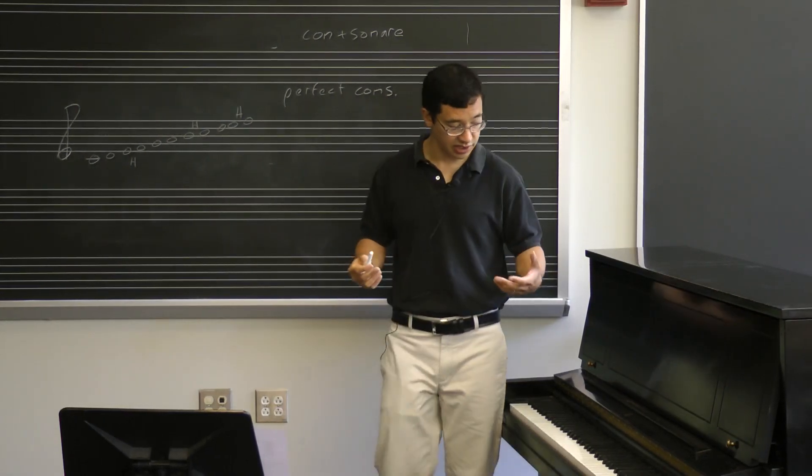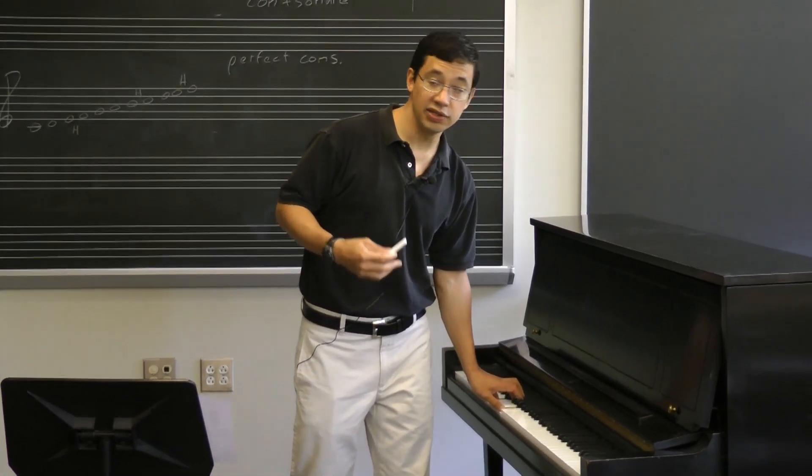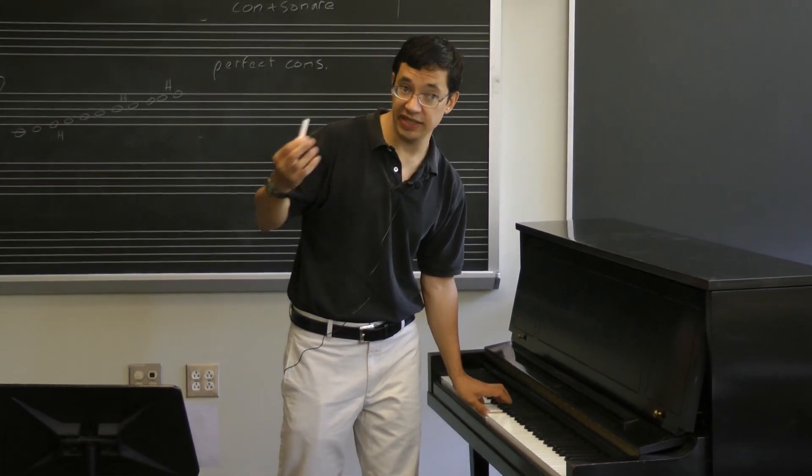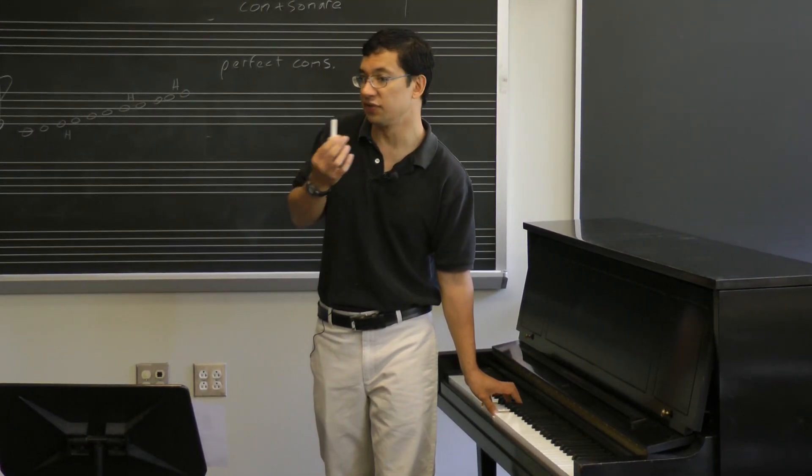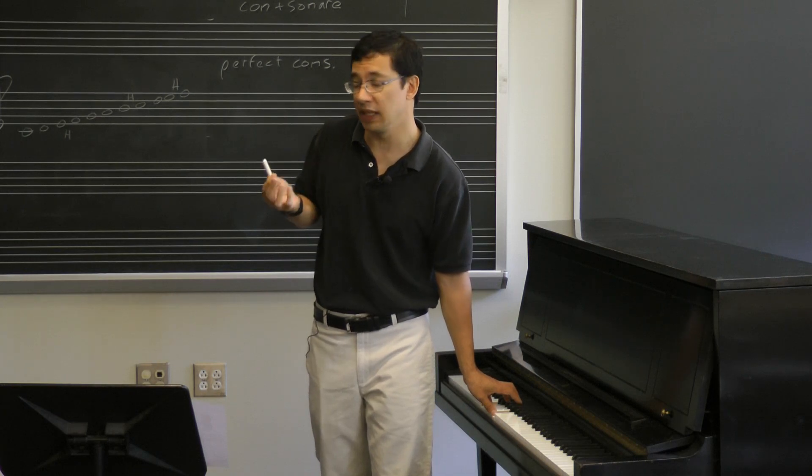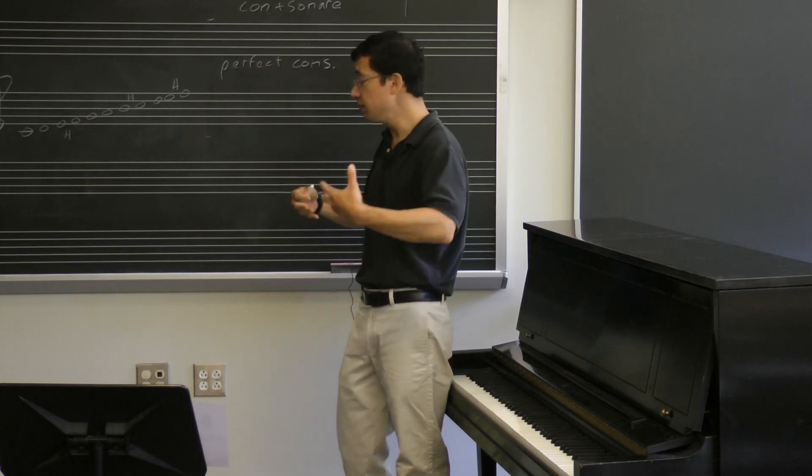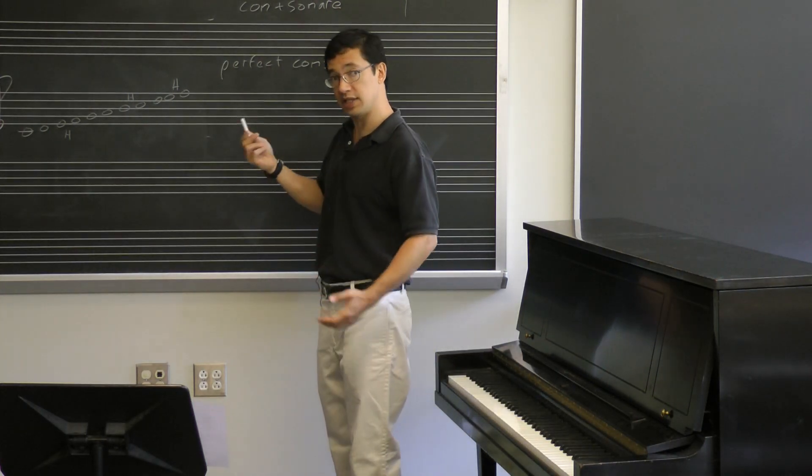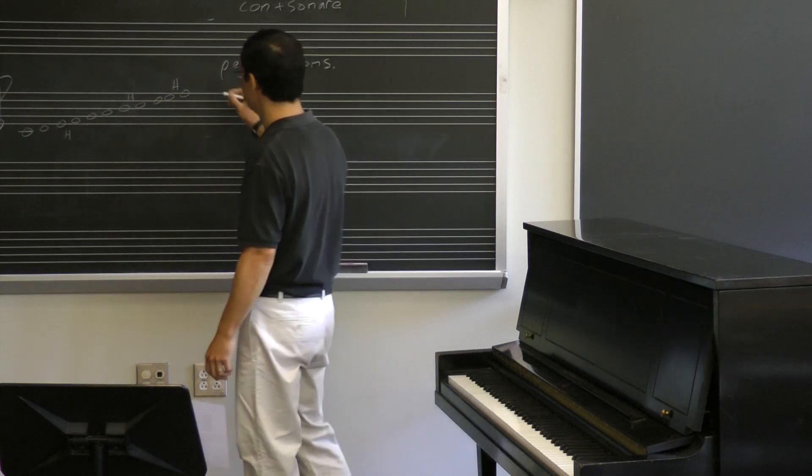Now, there are other kinds of consonances, such as this. Those notes also sound together well. They fit together well. And yet, they don't have that same sense of ring. They don't have that same sense of stability. We call these imperfect consonances. Again, not because there's anything wrong with them, but especially because in an earlier style of music, these were consonances that hadn't yet reached their intended goal.